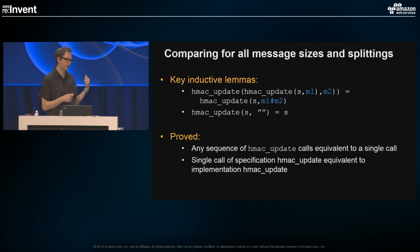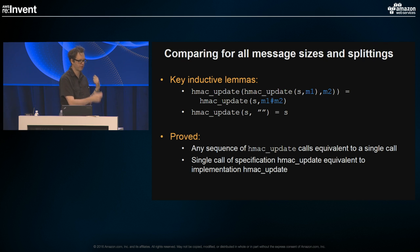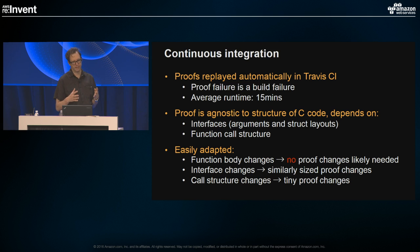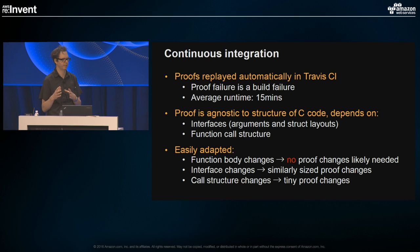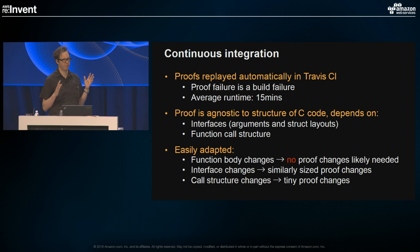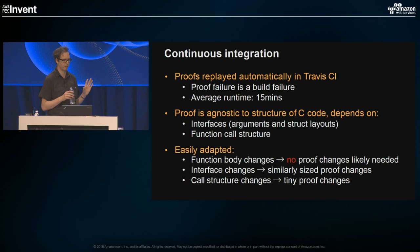There's also reasoning to do about updates: the S2N update function can be called many times, and the question is whether calling update twice is the same as calling it once on a larger message — that reasoning is done via induction in the tool. The proofs are replayed automatically in Travis CI, so a proof failure results in a build failure. On average, the runtime for those proofs is 15 minutes. The proof is relatively agnostic to the C code — you can add or change a loop and for the most part the proof will replay with no problem. The difficulty is when you modify S2N's data structures or function call structure, in which case the proof structure must currently be updated by a human.